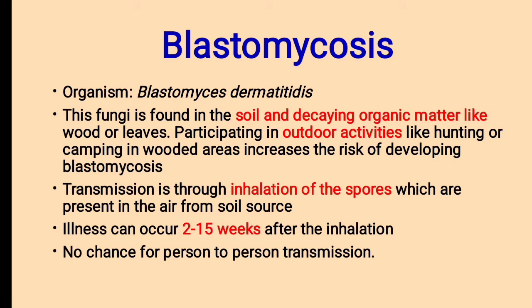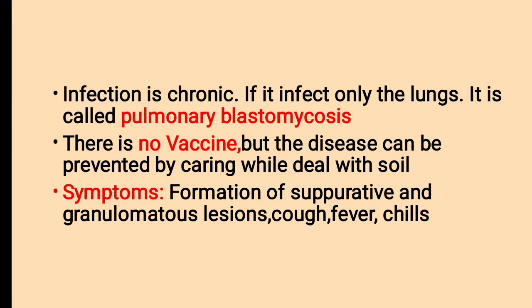Person-to-person transmission is very rare in the case of Blastomyces. The infection is chronic. If it infects only the lungs it is called Pulmonary Blastomyces. There is no vaccine available; only preventive measures can reduce the risk. The main symptoms of Blastomyces are formation of suppurative and granulomatous lesions, cough, fever, and chills. Suppurative means pus-forming lesions.